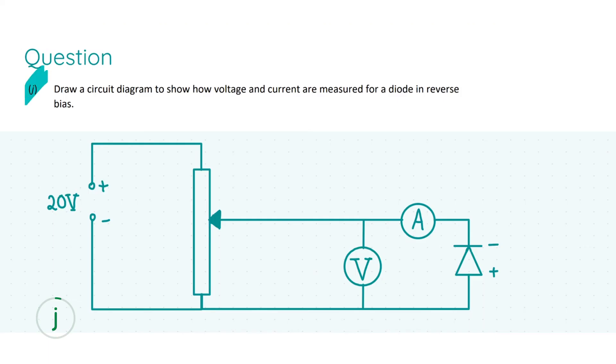In part j we're asked to draw a circuit diagram to show how voltage and current are measured for a diode in reverse bias. The key words being the diode is in reverse bias and we need to show how voltage and current are measured. These three things will be the basis for our marks. I've drawn in a random voltage source, 20 volts here, which we'll need as a reference for how to arrange the ammeter and voltmeter.